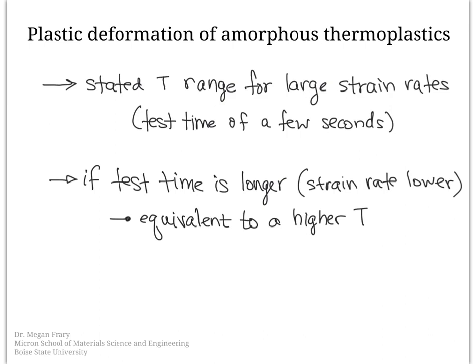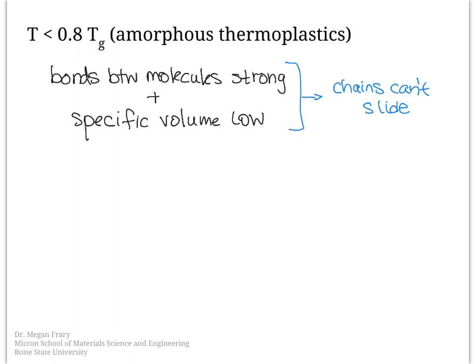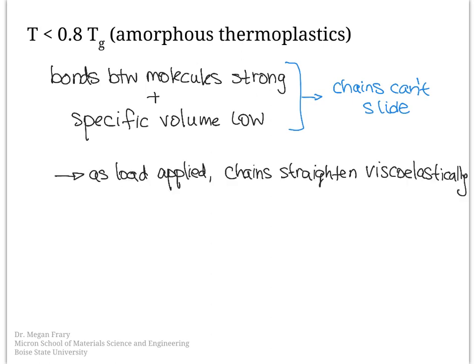Let's start by looking at what's happening far below the glass transition temperature. When we're far below the glass transition temperature, the bonds between the molecules are still strong and the specific volume is low, so the chains can't really slide. As a higher and higher load is applied, the molecules are straightening viscoelastically. Because the chains can't move, if the load continues to increase, then brittle failure will occur — essentially by breaking the intermolecular bonds.